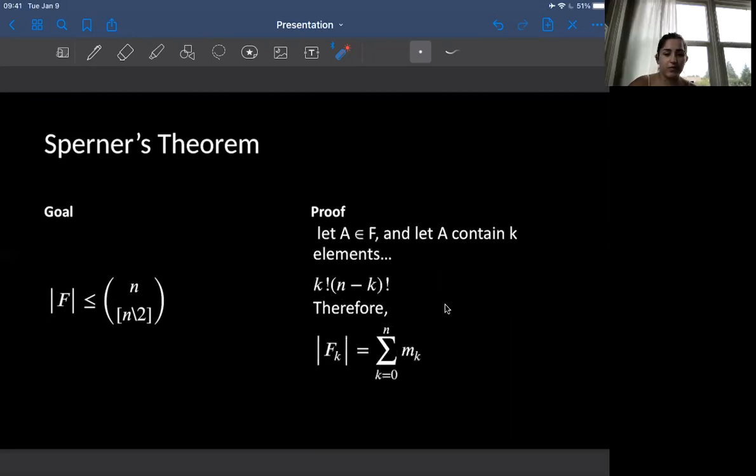So the next thing we're going to do, which is important for this, is to let mk be the number of k sets in F, so that F is equal to k up to n sets of mk, which is the last thing we have on this slide.